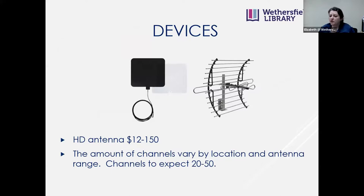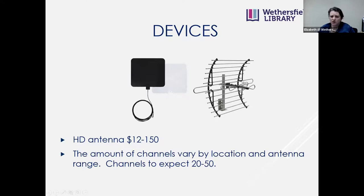An HD antenna is another option for local channels. You can expect 20 to 50 channels depending on topography and where you live. Prices range from $12 to $150 or more. My father bought a $35 outdoor antenna with multiple bars and gets a great range; I spent $70 on a flat panel that didn't work and returned it. Walmart and Target now carry antennas. Check antennaweb.org for information about what channels you can expect in your area.